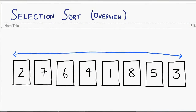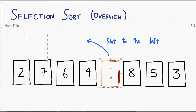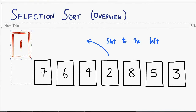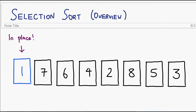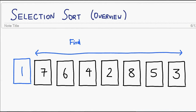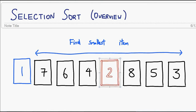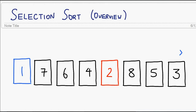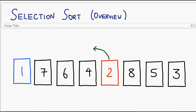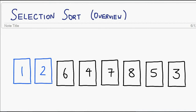The premise behind Selection Sort is really simple. Basically what we want to do is to have a pass through a list. We want to find the smallest element and we want to slot it to the left of the list. Then we will construct a new sublist that excludes the already sorted elements. That way, every pass will pick out the smallest item within whatever's left in the list and put it in front.